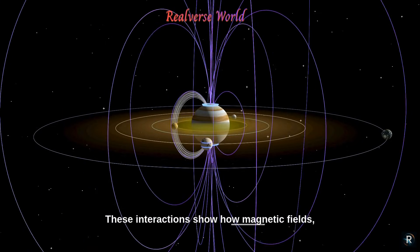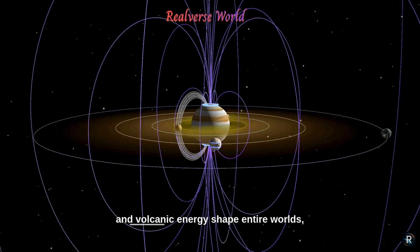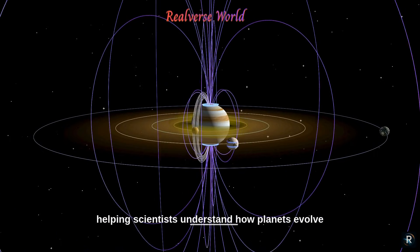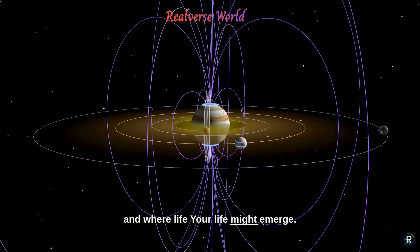These interactions show how magnetic fields, oceans, and volcanic energy shape entire worlds, helping scientists understand how planets evolve and where life might emerge.